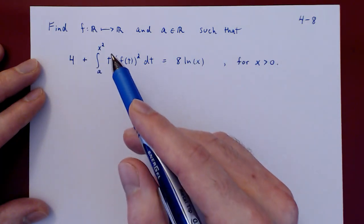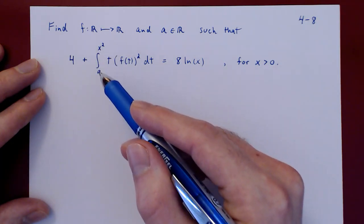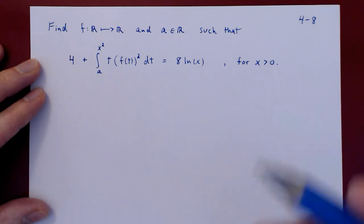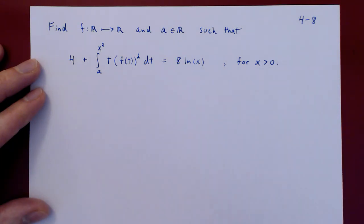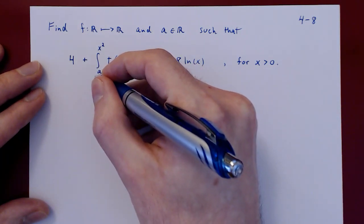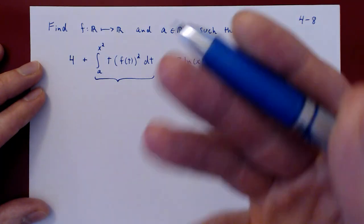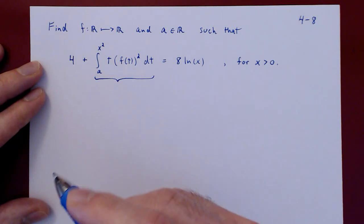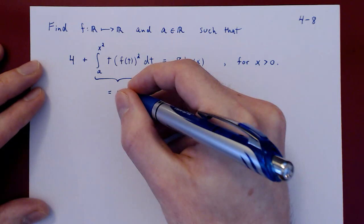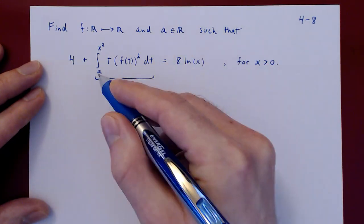When we have to differentiate an integral of the type — a definite integral — the way to make this as simple as possible is simply to rewrite the integral using the fundamental theorem of calculus, writing the integral as a difference of anti-derivatives. By the fundamental theorem of calculus, the definite integral is simply F of x squared minus F of a.